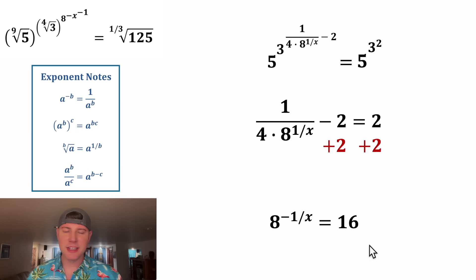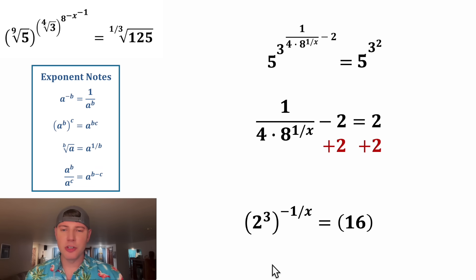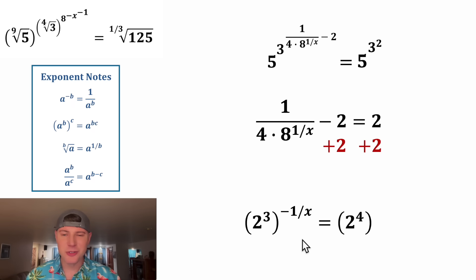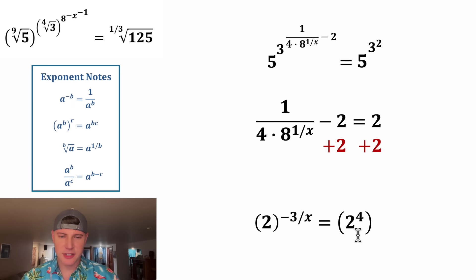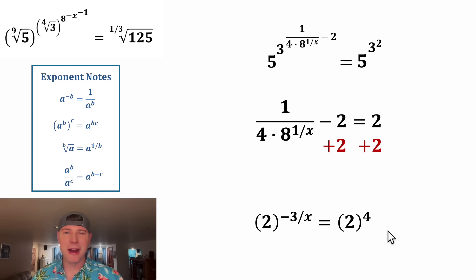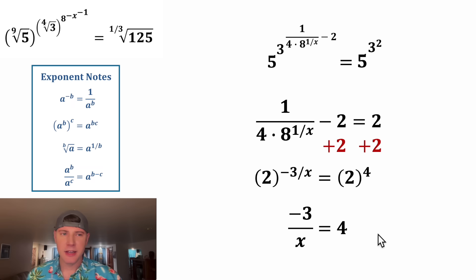Now we have an equation where this side has a base of eight and this side has a base of 16. Both eight and 16 can be expressed with a base of two: eight is two cubed and 16 is two to the fourth power. Using these rules, this exponent multiplies by this exponent, giving us two to the power of negative three over x. Then we have two to the power of negative three over x equals two to the power of four. Since these two bases match and they're not equal to one, negative one, or zero, this will only be true if the exponents are equal to each other.